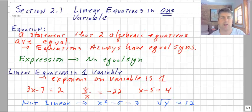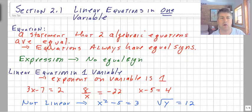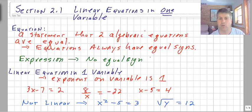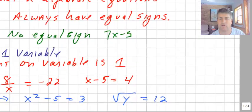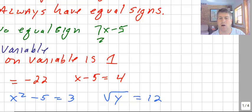While an expression, those are simply something like 7x minus 5, 3x plus 4y minus 5z. Those are just algebraic expressions. There's no equal signs here.